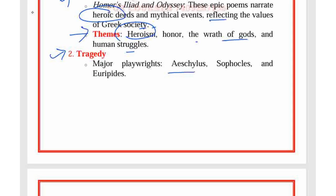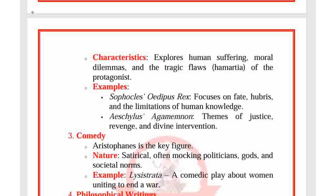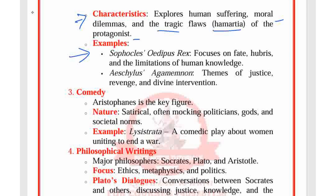For tragedy, the major playwrights are Aeschylus, Sophocles, and Euripides. Tragedy explores human suffering, moral dilemmas, and the tragic flaws of the protagonist. For example, Sophocles' Oedipus Rex focuses on fate, hubris, and the limitation of human knowledge. Aeschylus' Agamemnon deals with themes of justice, revenge, and divine intervention.